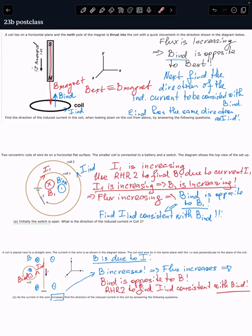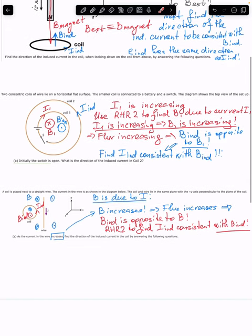The induced EMF has the same direction as the current, so that summarizes the solution to this problem. Now let's consider another one: we have two coils — coil one and coil two. The switch was just opened and they're going to close it right away. When you just close that switch, the current I1 will start flowing and I1 is going to increase as a function of time — that's a key point here.